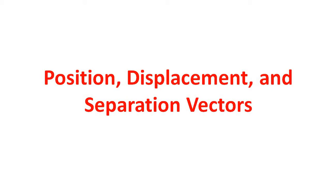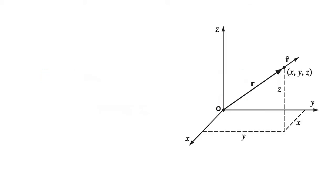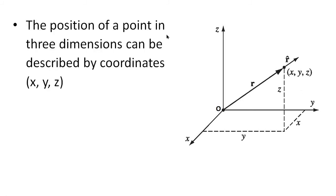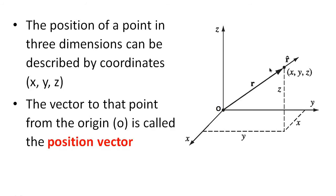Position, displacement, and separation vectors. We have a Cartesian coordinate system with origin and axes X, Y, and Z. If we consider a point, then R is called the position vector, and its direction is denoted by unit vector R cap. The position of a point in three dimensions is described by coordinates X, Y, Z. The position vector R is defined as X x-cap plus Y y-cap plus Z z-cap, where x-cap, y-cap, and z-cap are the unit vectors.